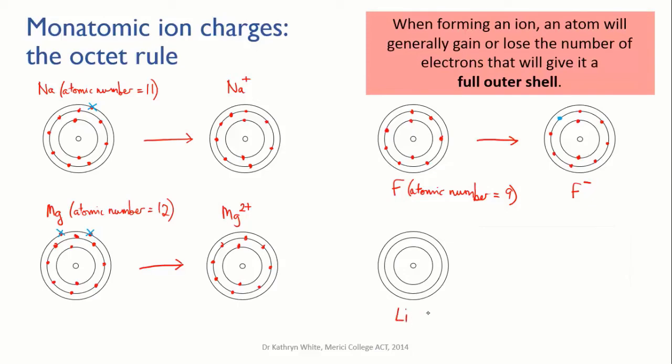One final example. Lithium is element number three. It has three electrons and three protons. It can either lose one electron or gain seven to get a full outer shell. Losing one is the easiest option, so it does that.